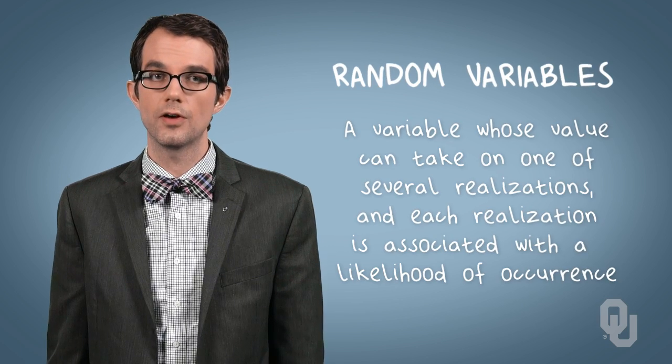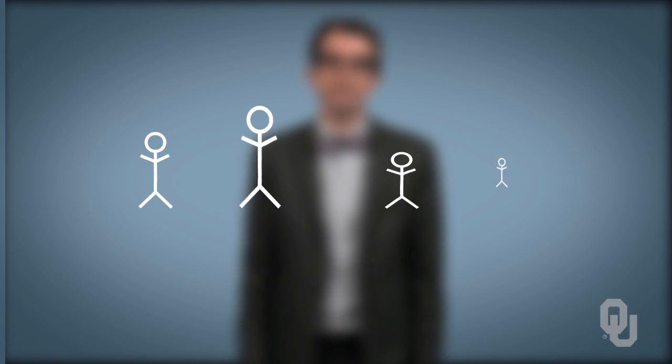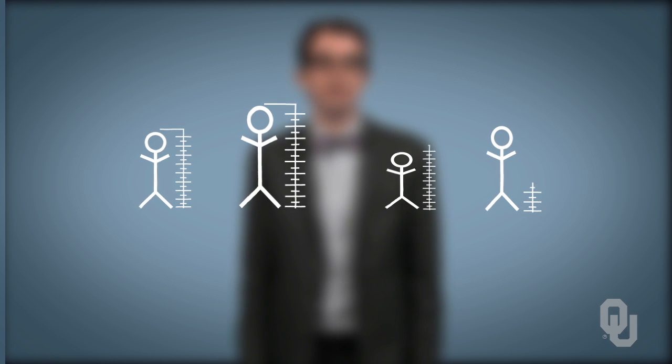An easy example of a random variable is the height of the next person that enters the room. Not everyone is the same height, therefore the height of a person can take on many realizations. There is a range of heights that a randomly chosen person could have, and each one of those realizations has a likelihood of occurring. The person being 5'9 is more likely, for example, than the person being 8'2.